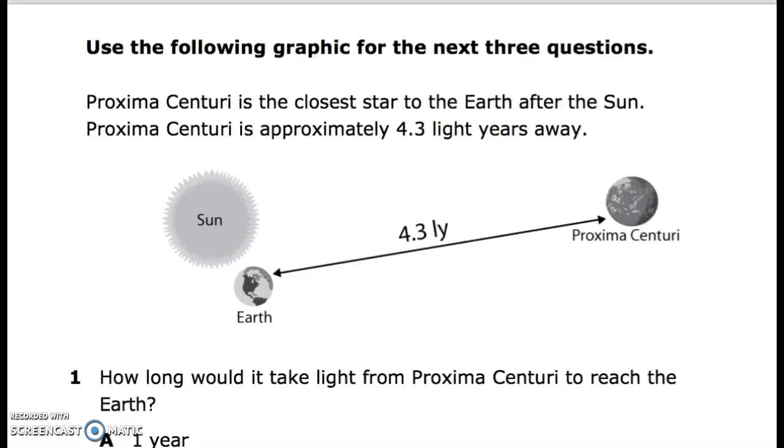Use the following graph for the next three questions. Proxima Centauri is the closest star to the Earth after the Sun. Proxima Centauri is approximately 4.3 light years away. Sun, Earth, 4.3 light years, Proxima Centauri.